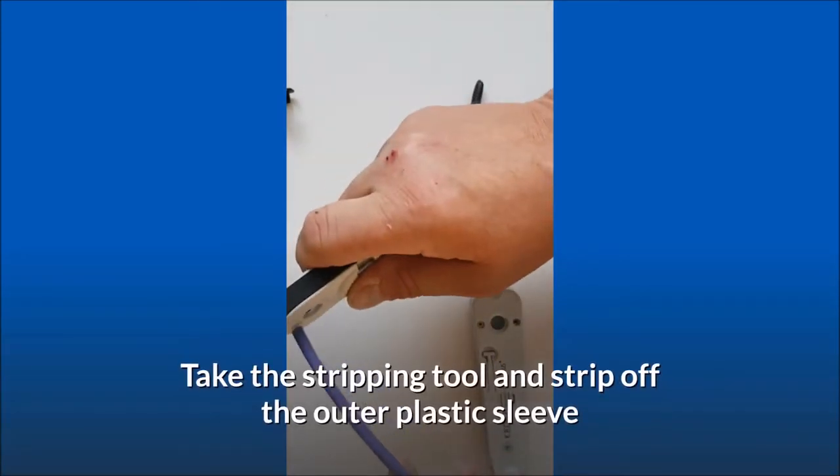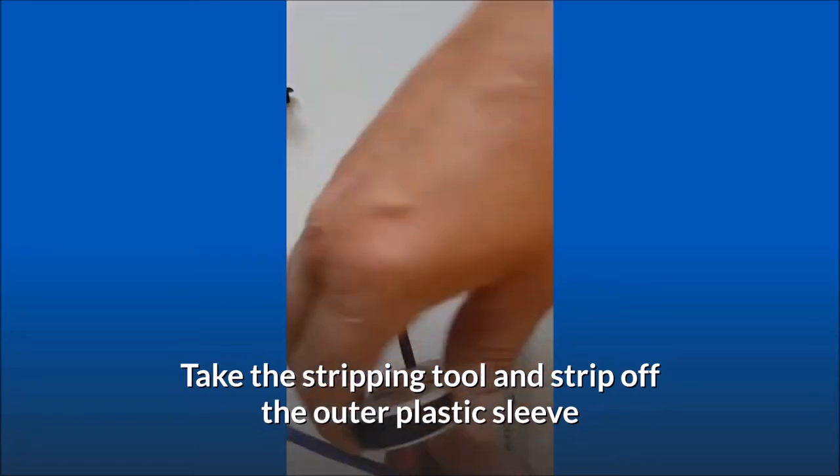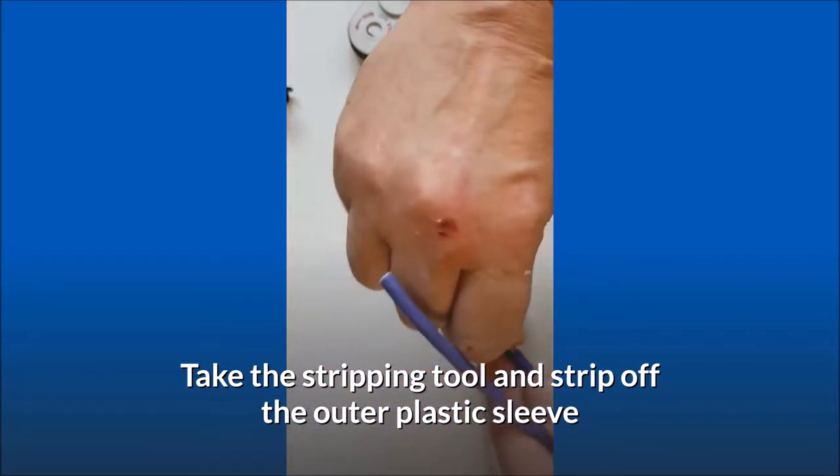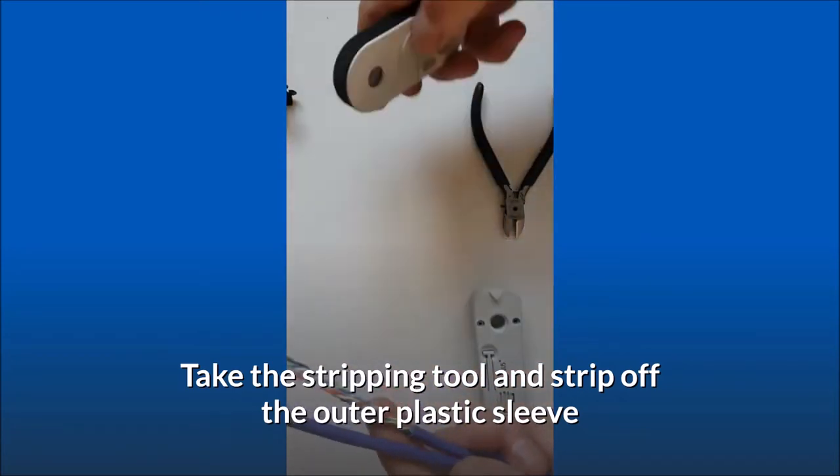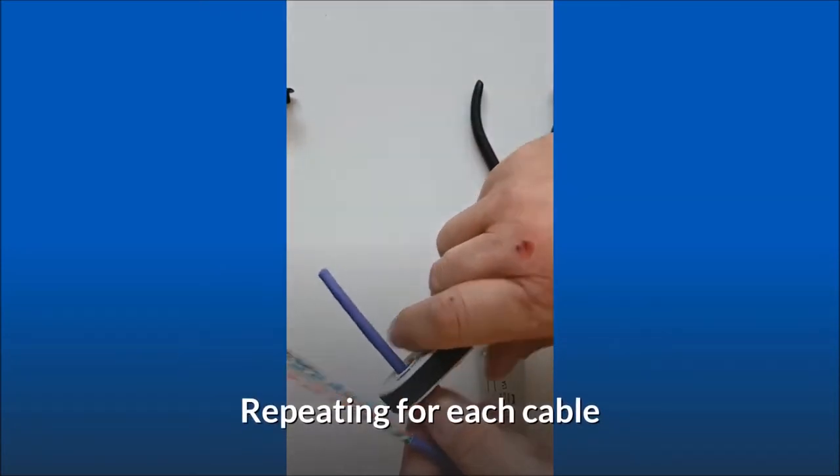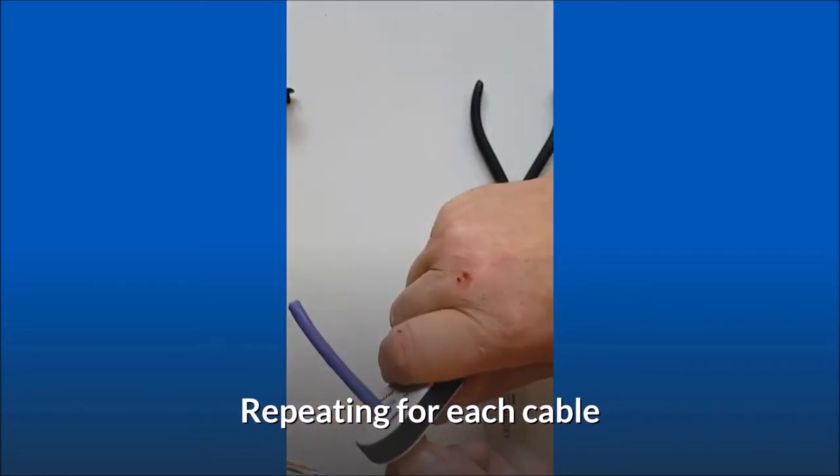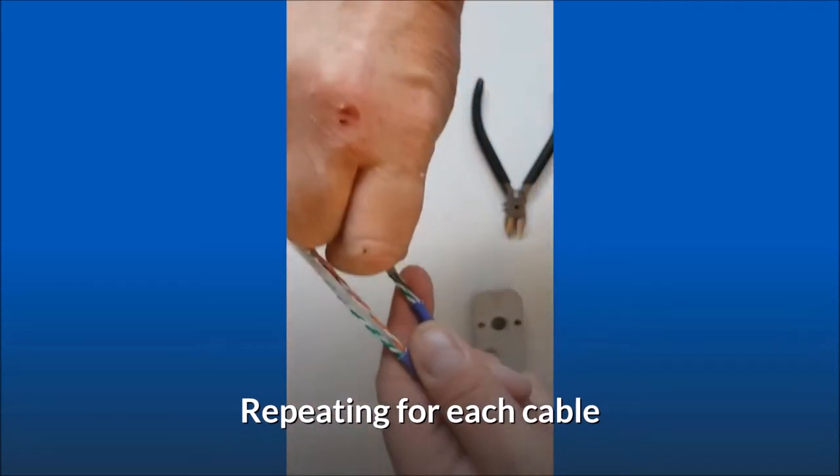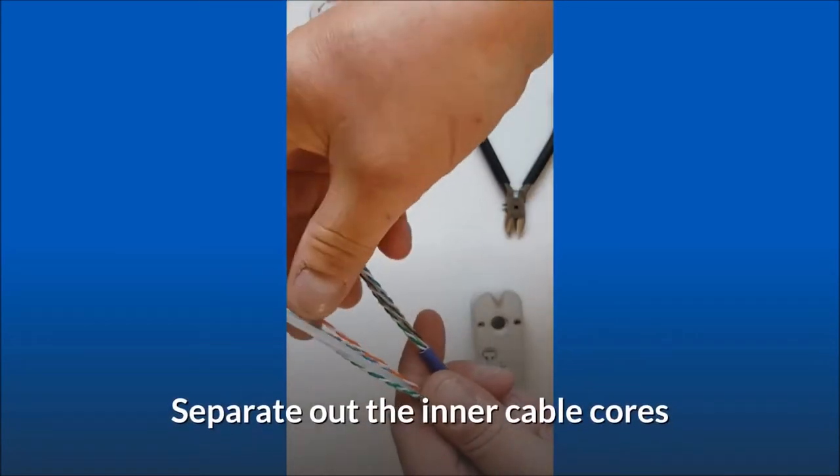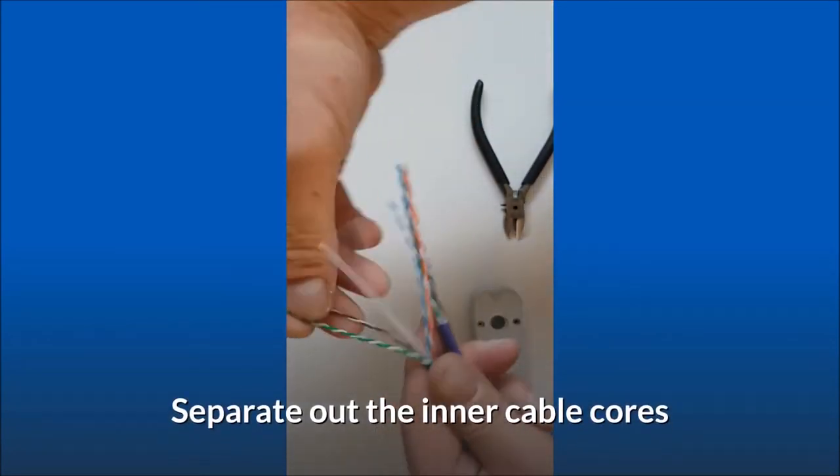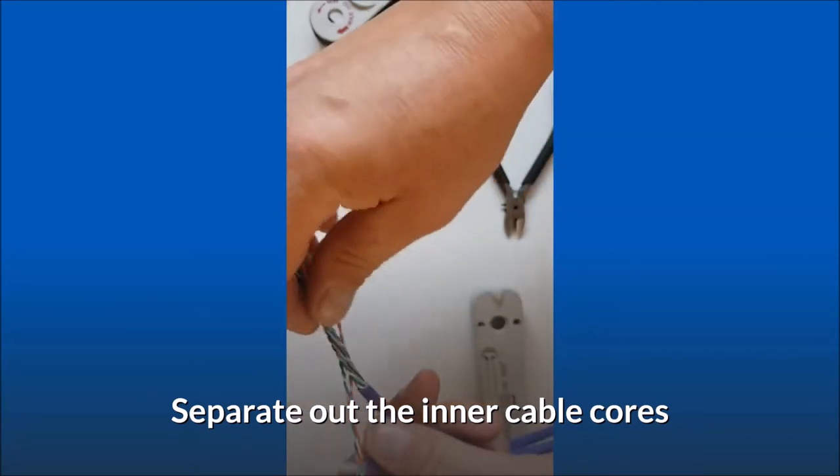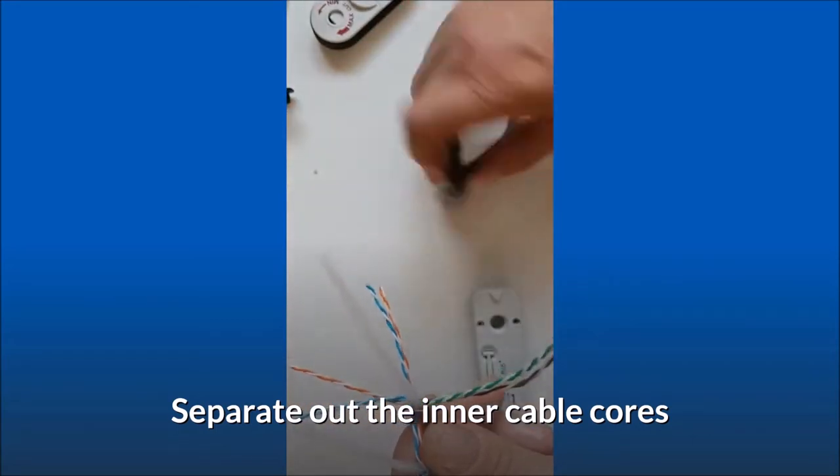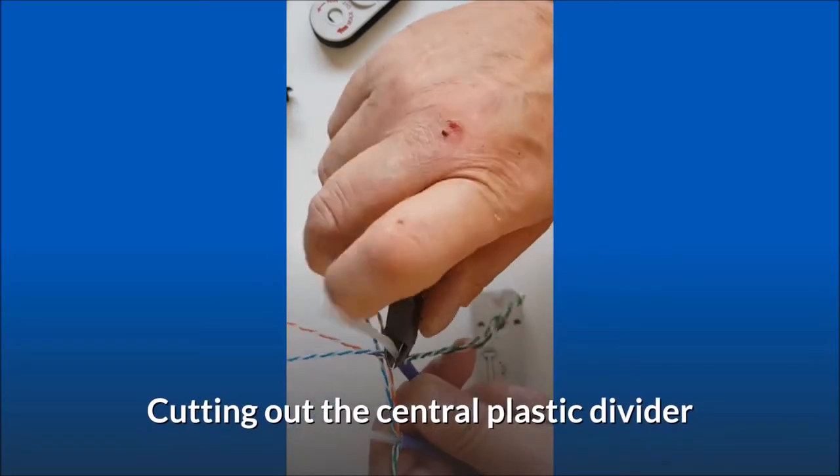Take the stripping tool and strip off the outer plastic sleeve. Repeat for each cable. Separate out the inner cable cores. Cut out the central plastic divider.